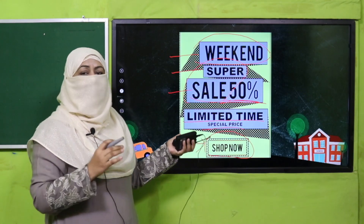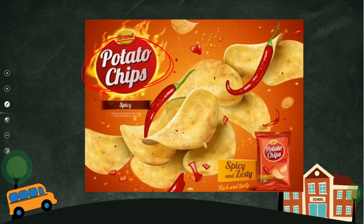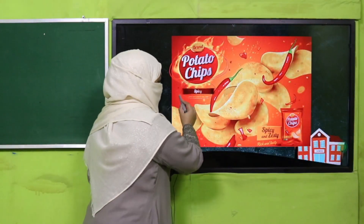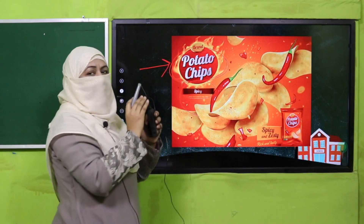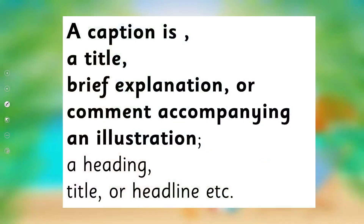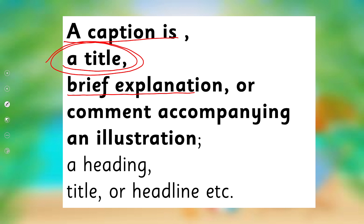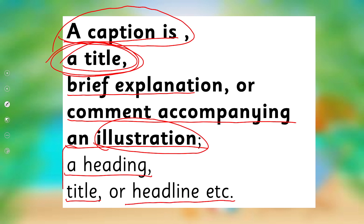Now look at this — its caption is 'Potato Chips,' and to make it more attractive, details like 'spicy' are added. This is how a caption is given, which tells us what the advertisement is about, and the details make it a complete advertisement. A caption is basically a title — a brief explanation or comment accompanying an illustration. There is a picture and a title — that is called a caption. A heading, title, or headline — all are names for a caption.